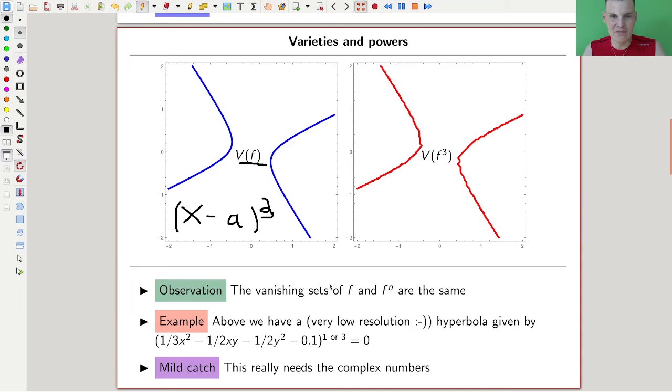In general, the vanishing sets, the V's of f and f to the n, should always be the same.